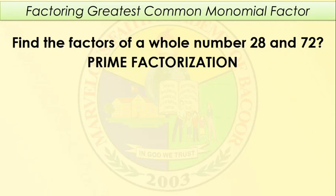Next, find the factor of the whole numbers 28 and 72. There are a lot of methods in factoring, but the most common method is to get the prime factorization. When we say prime factorization, we need to get the factors of 28 where the factors must be prime numbers — numbers that have only two factors: 1 and the number itself.